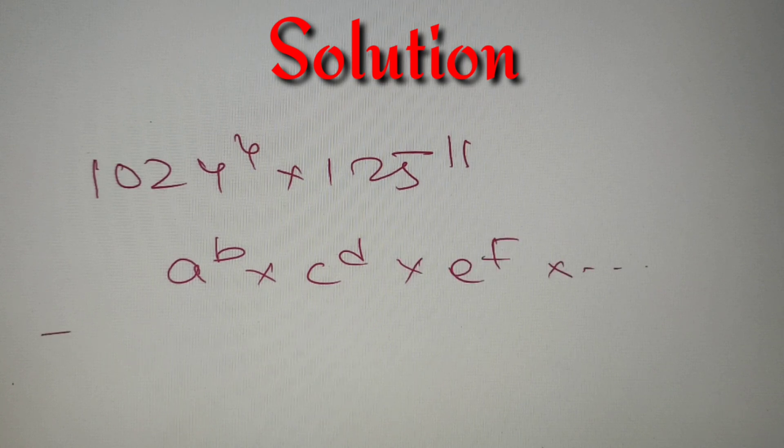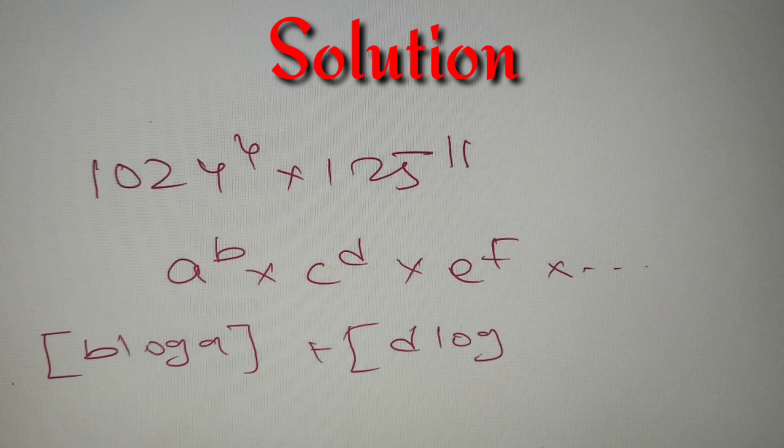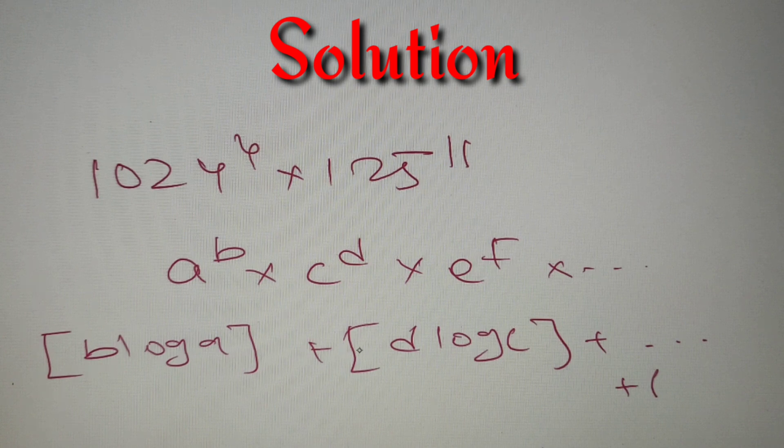then the number of digits in it will be equal to [b log a] in the greatest integer function plus [d log c] in the greatest integer function plus so on and so forth, and we have to add plus 1 to it. So by using this formula we can find out the number of digits in any given number.